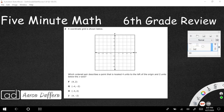Super simple. Once again, it's based on a vocabulary term, the origin. It says, which ordered pair describes a point that is located four units to the left of the origin? Where's the origin? I don't see anything labeled origin here. This is a vocabulary word that you're going to have to know.